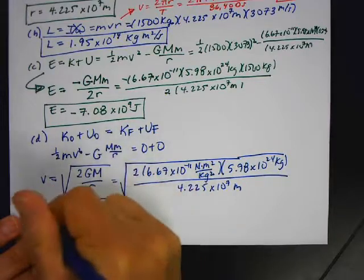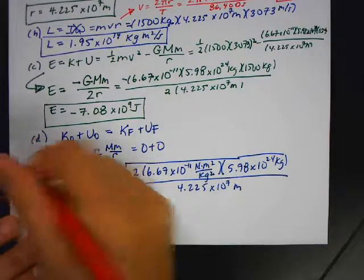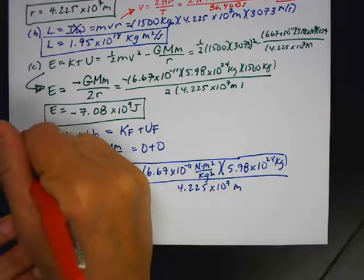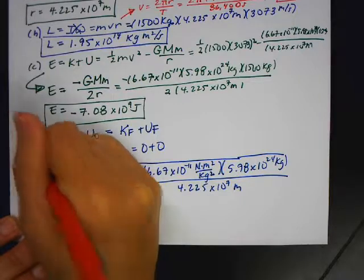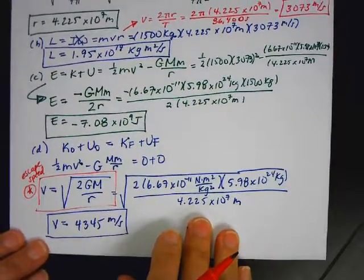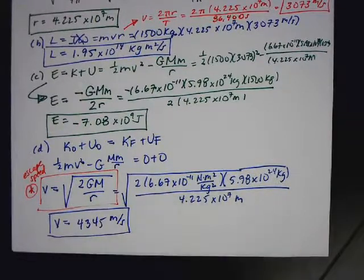Again, what you need to do is you need to program this in your calculator and say this is escape speed. You need to program in the radius. Now remember, there's also the period in terms of the other variables depending upon what they ask you, because every question is going to be just a little bit different. Okay? And you do it step by step.